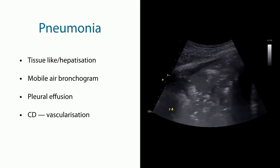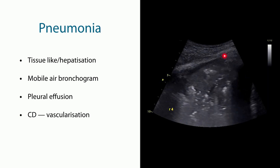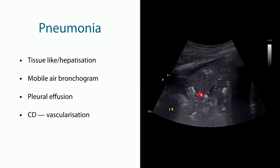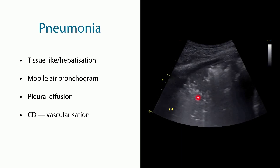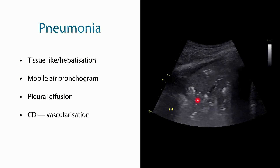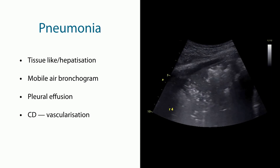Other appearances we can see in pneumonias include a tissue-like pattern — hepatisation — where the pneumonia looks almost like the liver. We see mobile air bronchograms, these hyperechoic lesions which represent trapped air in the infiltrate. They are called mobile air bronchograms because they move with expiration. We can also see a pleural effusion, and we can use color Doppler or power Doppler to visualize vascularization.